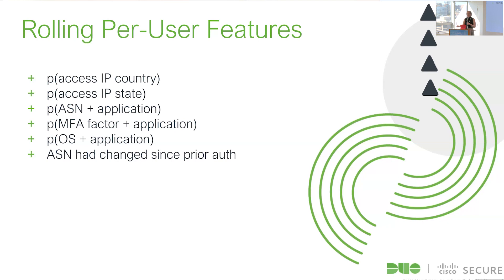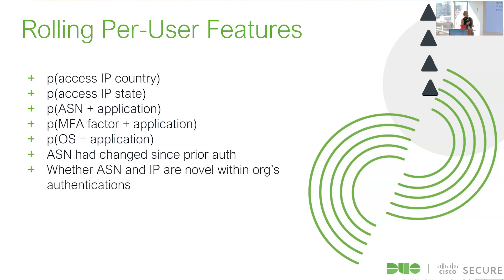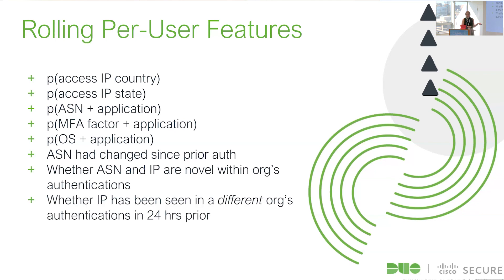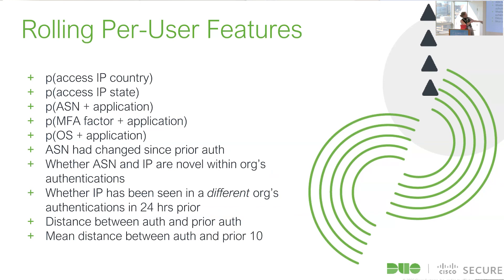We also have contextual features: has the ASN changed since the prior authentication? Is the user deviating from their normal behavior? Is the ASN or IP address new within a user's organization in the last 24 hours? Conversely, has someone at a different organization used that same IP in the last 24 hours? And we look at the distance between the authentication's lat/long and the average distance across the last 10 authentications — looking for sharp deviations from typical behavior.